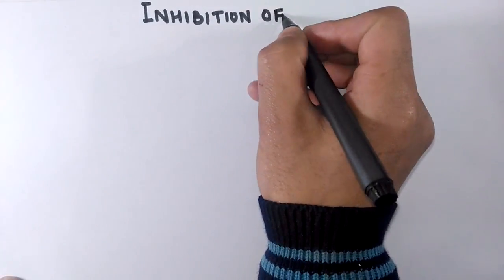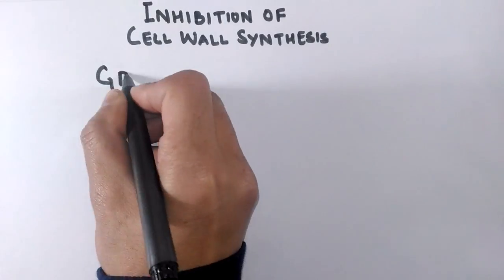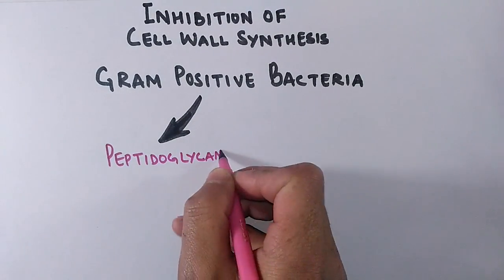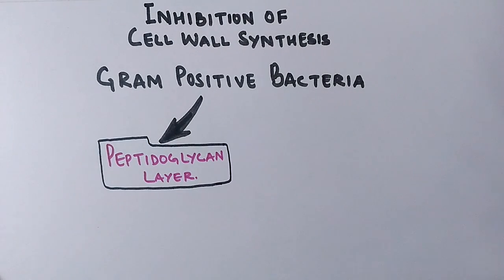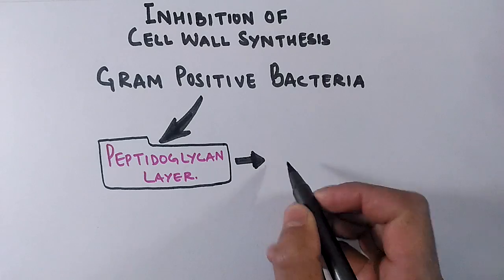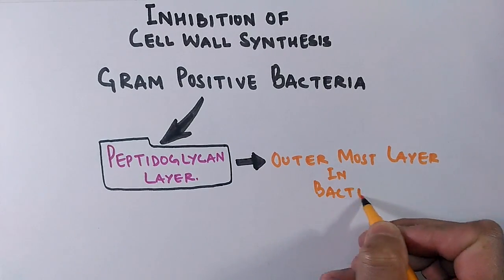Then there is inhibition of cell wall synthesis by antibiotics, and it mostly occurs in gram-positive bacteria because the antibiotics target the peptidoglycan layer. This peptidoglycan layer is mostly present in gram-positive bacteria in large quantity, whereas it's present in gram-negative bacteria 5 to 10 percent and that too on the inner side, while in case of gram-positive bacteria, it's present on the outer side of cell wall. That's why it mostly occurs in gram-positive bacteria.